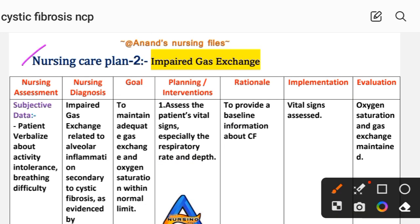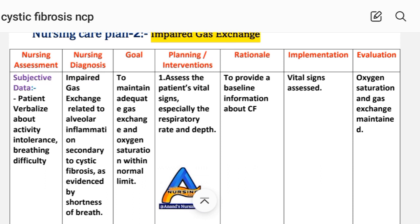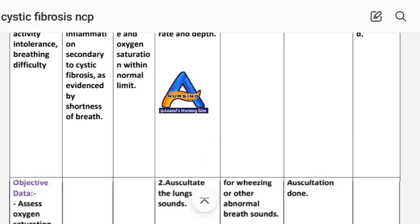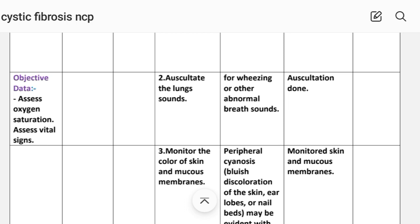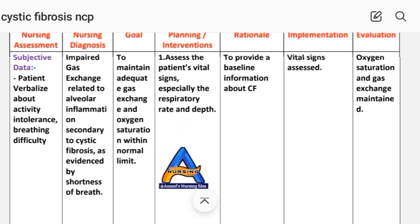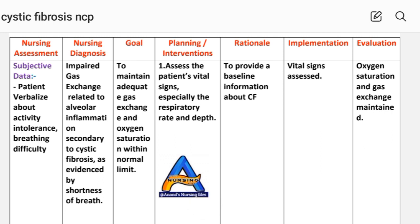Nursing care plan number two: impaired gas exchange. Nursing assessment — subjective data: patient verbalizes about activity intolerance and breathing difficulty. Objective data: assess oxygen saturation and assess vital signs. Nursing diagnosis: impaired gas exchange related to alveolar inflammation secondary to cystic fibrosis, as evidenced by shortness of breath. Goal: to maintain adequate gas exchange and oxygen saturation within normal limits.